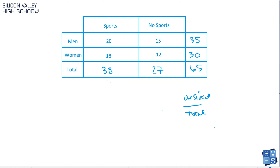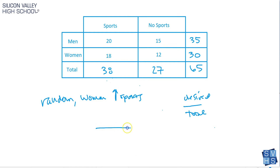Maybe they'll say: if I pulled a random person, what are the odds that it's a female that does play sports? You already know the denominator is 65 because we're choosing from the whole population. And how many women play sports? You're looking at 18. So that's 18 out of 65.